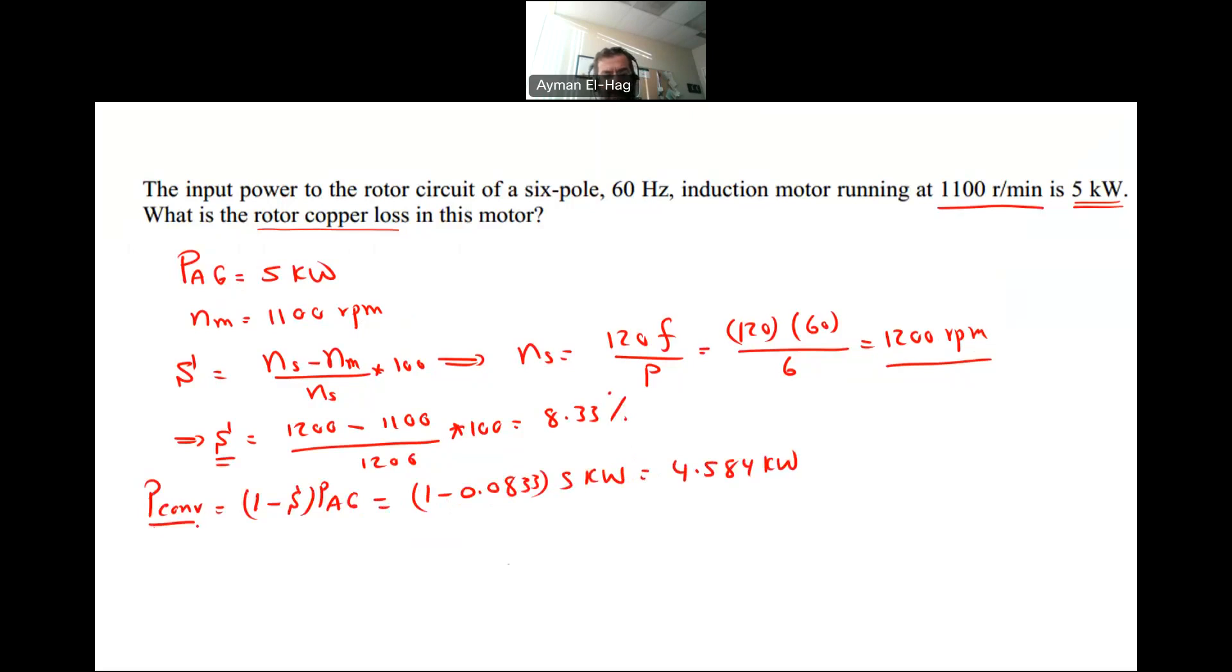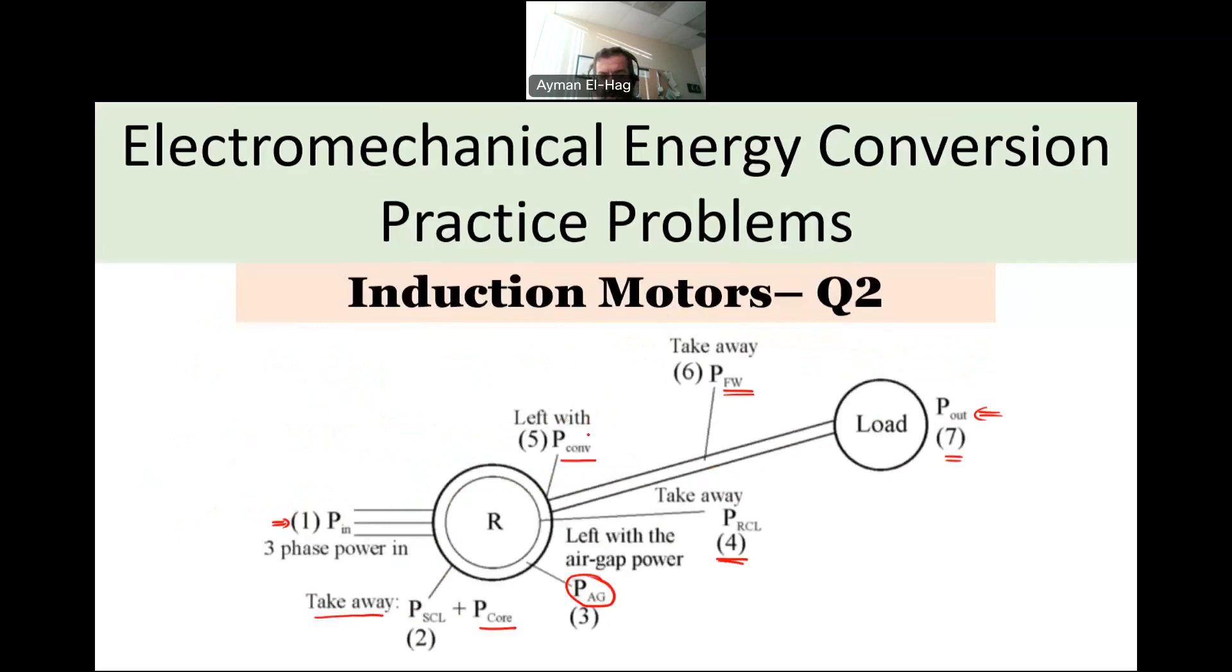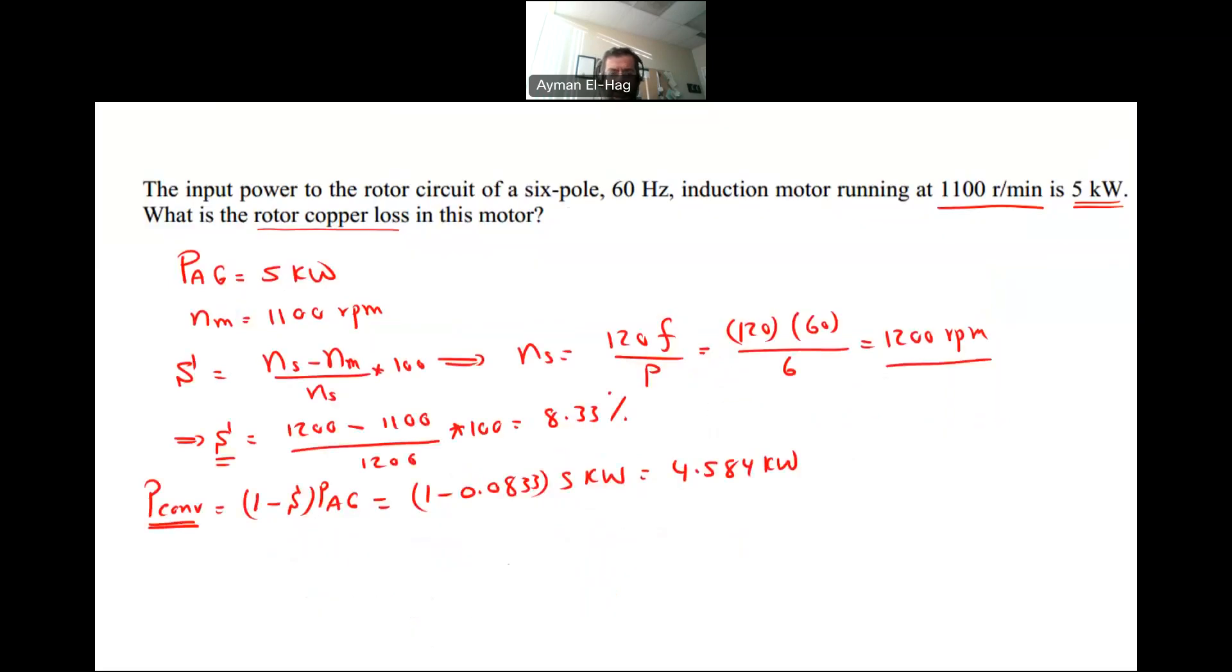Now, I know the converted power. I know PAG. So this is the converted. This is power in the air gap. The difference between two will give us PRCL. So your PRCL, the power loss in the rotor is equal to the PAG minus P convert, which is equal to the 5 kilowatt minus 4.584 kilowatt. And this is equal to 0.416 kilowatt.